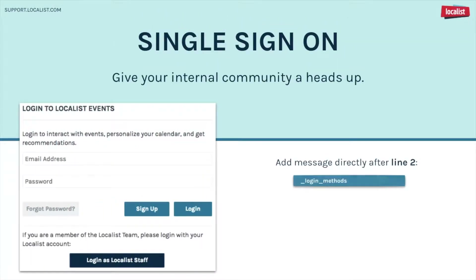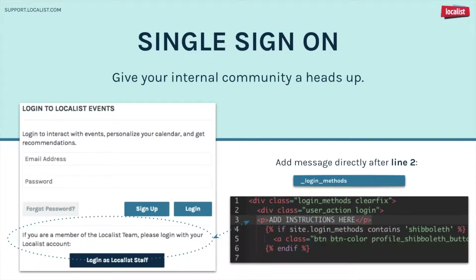Now let's skip down the lightbox just a bit and revisit that single sign-on button we had changed to say 'Login as Localist Staff'. While tweaking the call-to-action language often does the trick, if you'd like to add messaging above this button, you can do so by jumping over to the Login Methods file. This file has much more code in it, but don't be intimidated. To add content in between the local login fields and your single sign-on button, add a new line between the current lines 2 and 3 of an unedited file. From there, just add the desired HTML on the new line 3.